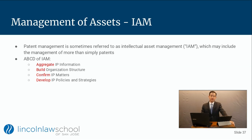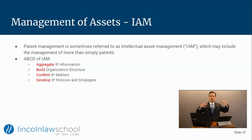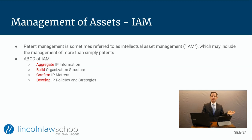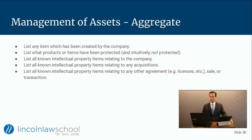My acronym for this is the ABCD. The ABCDs break down IM into four discrete steps a company generally will go through. Step one is to aggregate IP information — pulling it all together. Two is to build out some type of organization or classify things internally. Third is to confirm IP matters, such as whether you're the actual owner. And fourth is to develop IP policies and strategies.